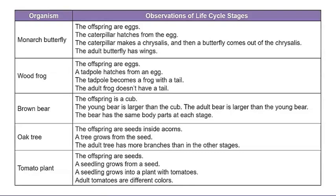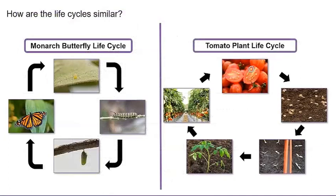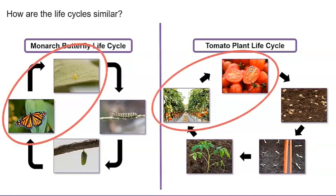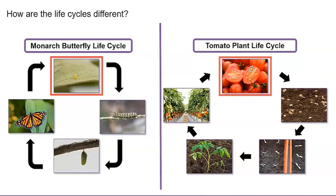Wow! Look at all of our collected data. Let's pick two of our organisms and compare their life cycles. How about the monarch butterfly and the tomato plant? How are the life cycles similar? Both the monarch butterfly and the tomato plant look different at each stage of their life cycle. Also, both produce offspring after the adult stage. How are the life cycles different? The monarch butterfly and tomato plant offspring look different. Tomato plants grow from seeds and monarch butterflies grow from eggs.